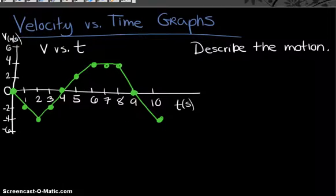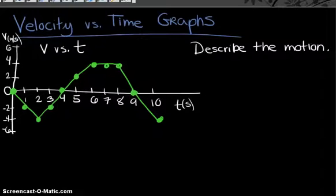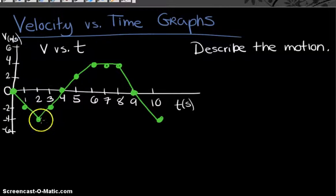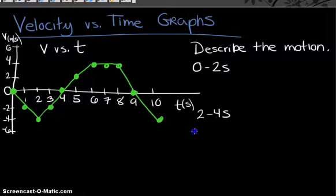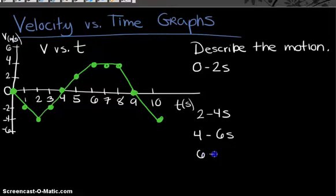The first question is: can we take this velocity versus time graph and translate it into a verbal description of the motion? To describe the motion, I like to identify segments aligned by clock reading. I notice distinct types of motion from zero to two seconds, two to four seconds, four to six, six to eight, eight to nine, and nine to ten seconds.